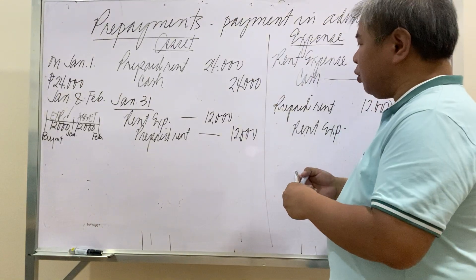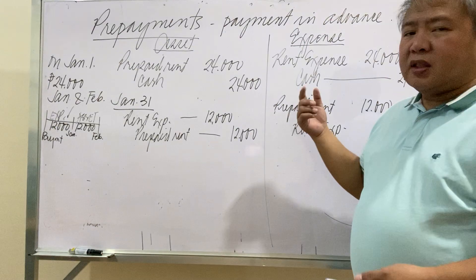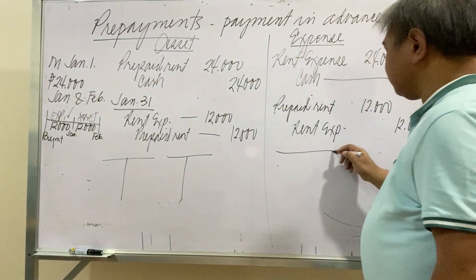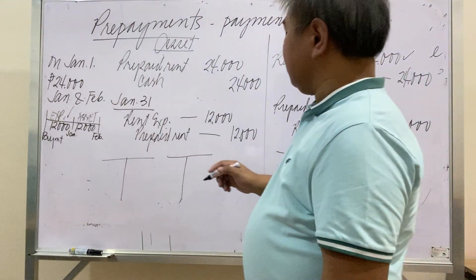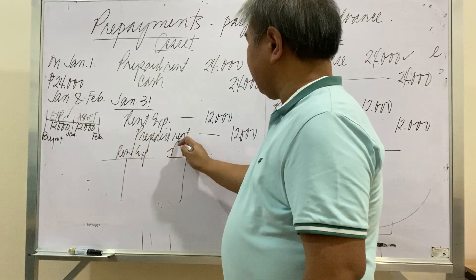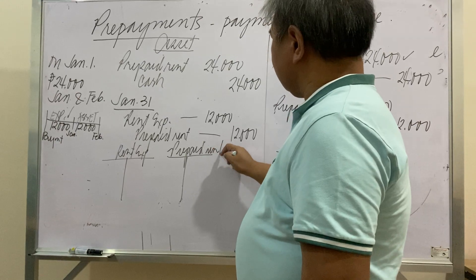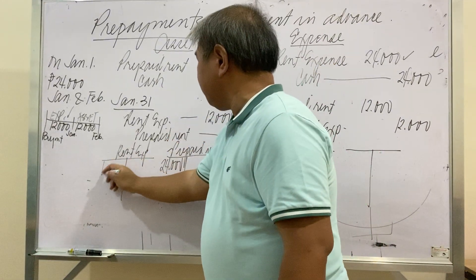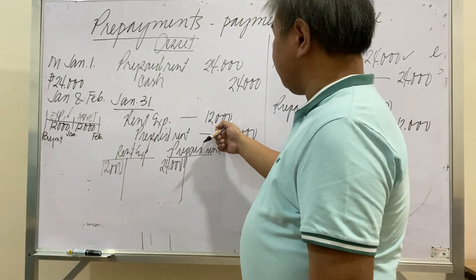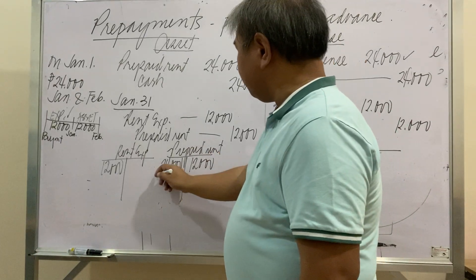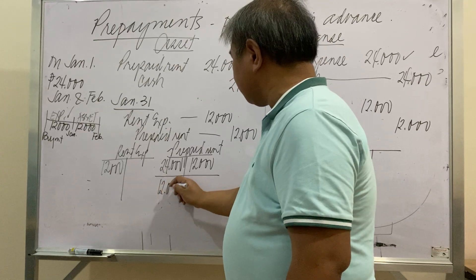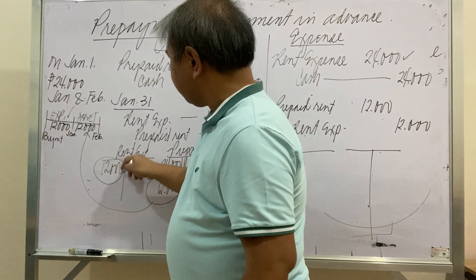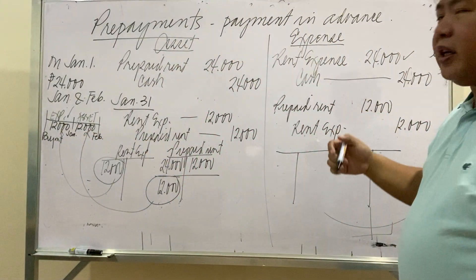If you compare both methods, the adjusting entries are essentially the exact opposite of each other. Looking at the T-account analysis for the asset method: Prepaid Rent was debited 24,000, then credited 12,000 via the adjusting entry, leaving a balance of 12,000. Rent Expense ends at 12,000. Both asset and expense amounts are the same.